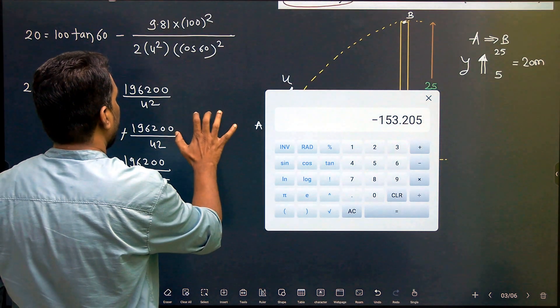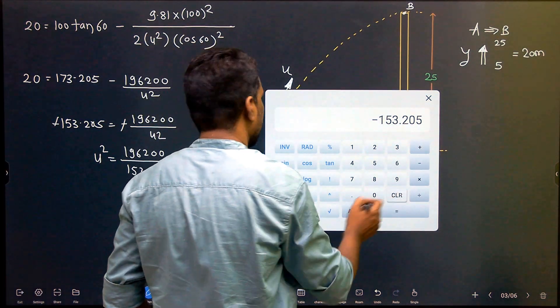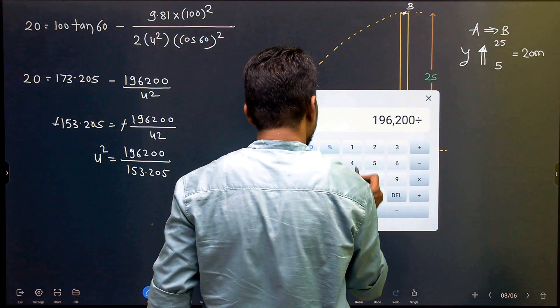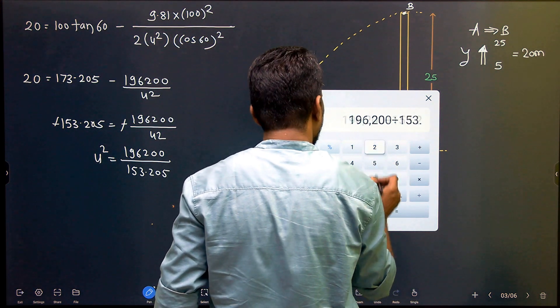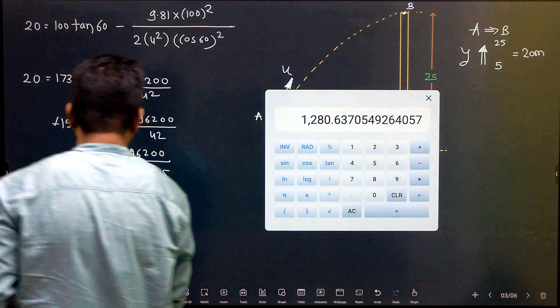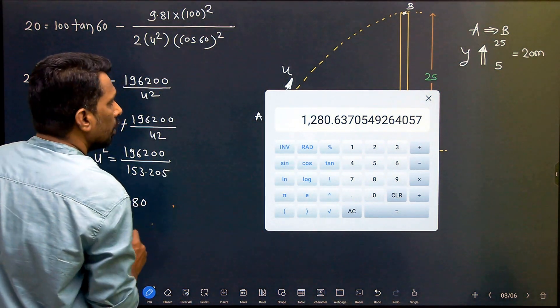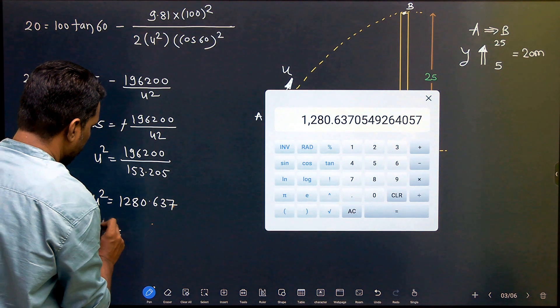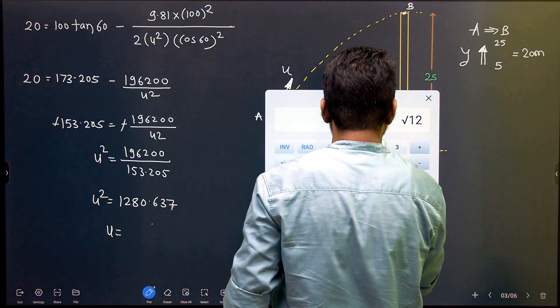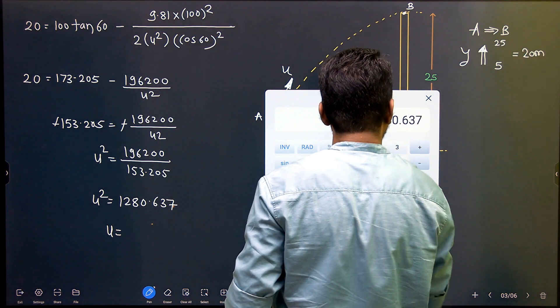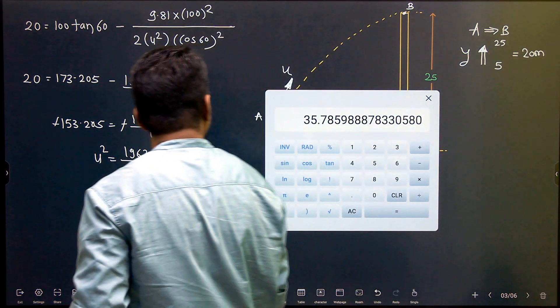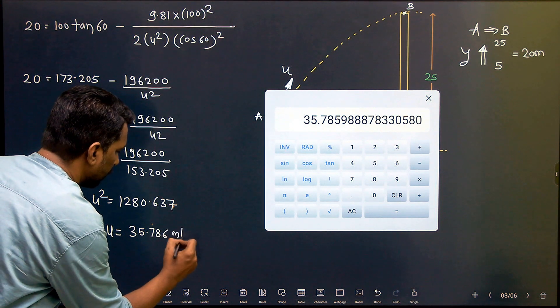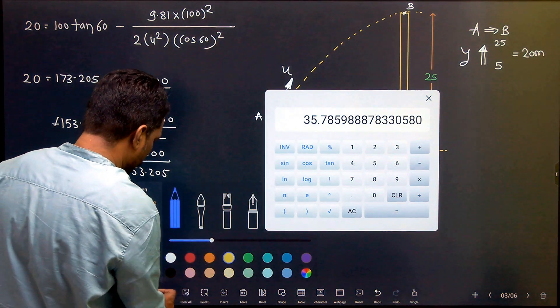If you take a square root of it, 196200 divided by 153.205 gives 1280.637, which is equal to u square. U is the square root of 1280.637, which is 35.7859786 meter per second. This is my final answer, which was asked in the question.